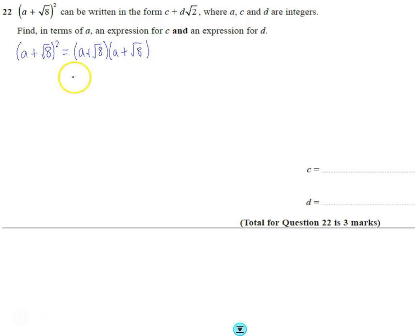A plus √8, a plus √8. So we multiply up these double brackets: a times a is a², then a times √8 twice gives 2a√8, and √8 times √8 is √64 or just 8.